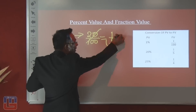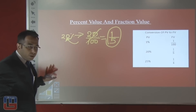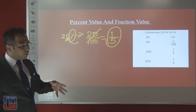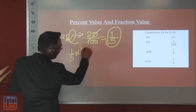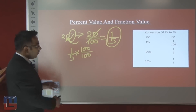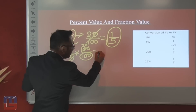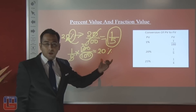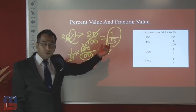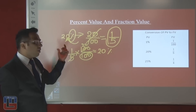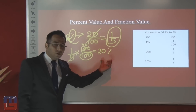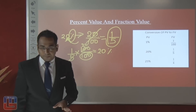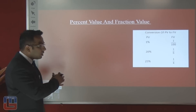To convert a fraction value back to percent, we multiply by 100. Since percent means 1 by 100, multiplying by 100 gives us the percent sign. So 1/5 multiplied by 100 gives 20%, and we just write the percent symbol instead of writing 'multiply by 100' each time. This is the concept of converting between percent and fraction values.